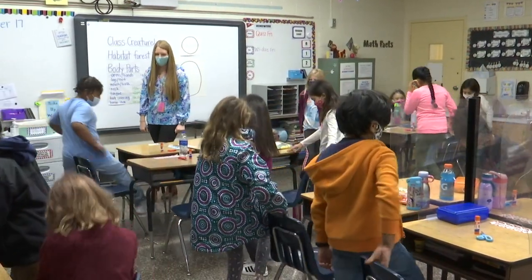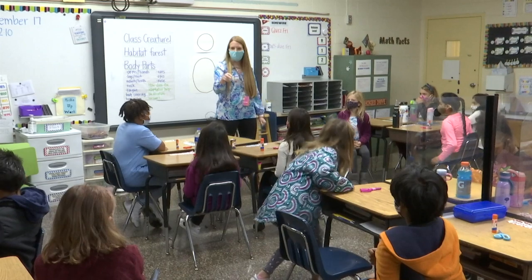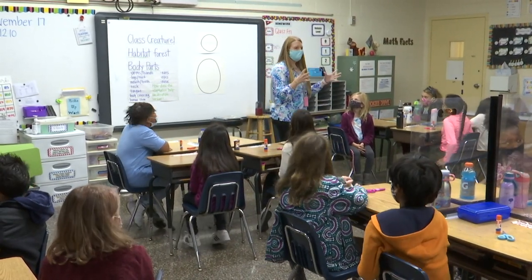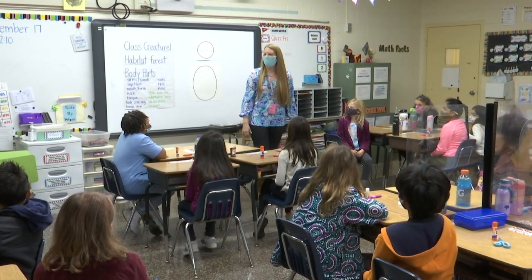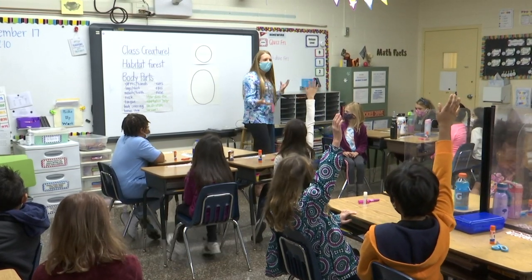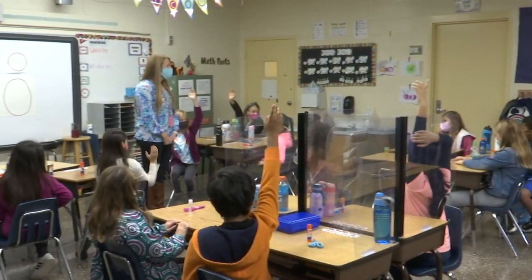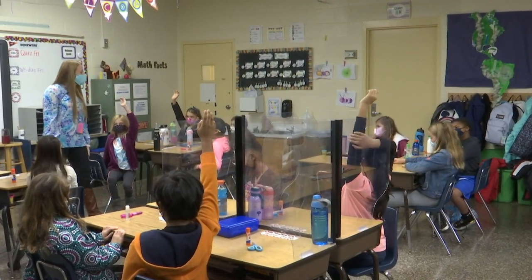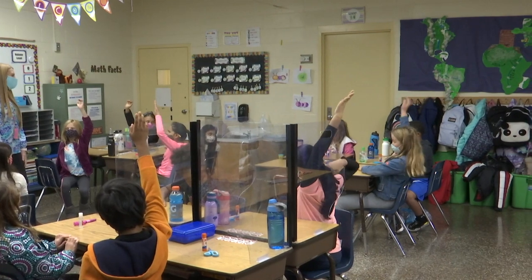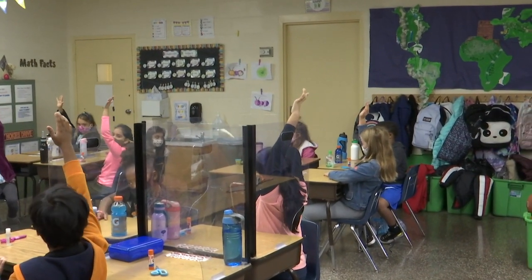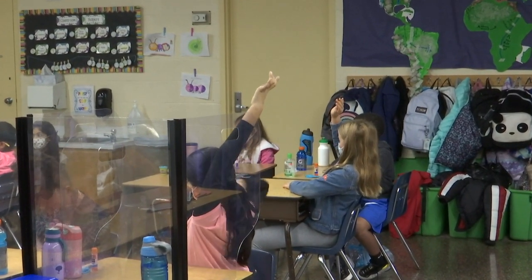So today we are going to be focusing on those physical adaptations — the adaptations that you can see. There's something on the animal's body that is helping it survive in its environment. Who can tell me some examples of animals that have a physical adaptation? Sophie? Polar bears have camouflage. Polar bears have camouflage. Can you tell me what camouflage is? Camouflage is a shape, a pattern, or a color on an animal's skin that helps it blend into the animal's surroundings.